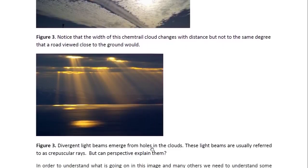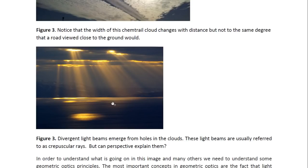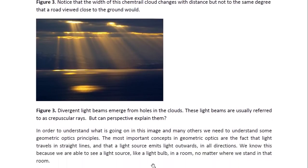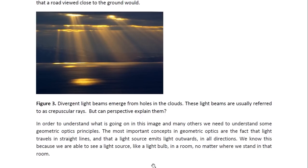Now in this photograph, this is usually explained in terms of crepuscular rays — what we see is divergent beams which emerge from holes in the clouds. These light beams are usually referred to as crepuscular rays. But can perspective explain what we see here? In order to understand what is going on in this image and many others, we need to understand some geometric optics principles. The most important concepts in geometric optics are the fact that light travels in straight lines and that a light source emits light outwards in all directions.